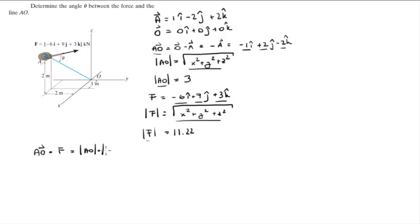So AO is equal to negative 1i plus 2j minus 2k and F is equal to negative 6i plus 9j plus 3k, and that is equal to the magnitude of AO which is 3 times the magnitude of F which is 11.22 times the cosine of theta.